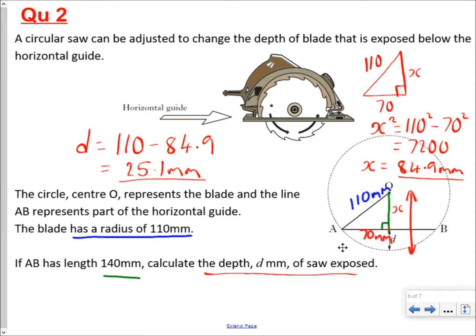That's how you tackle questions involving chords and bisectors. When given a question like this: split the chord in two, extend your perpendicular bisector up to the centre, and form a right-angled triangle. Use Pythagoras, and having done the first step correctly, everything else falls into place. I hope you found that helpful.